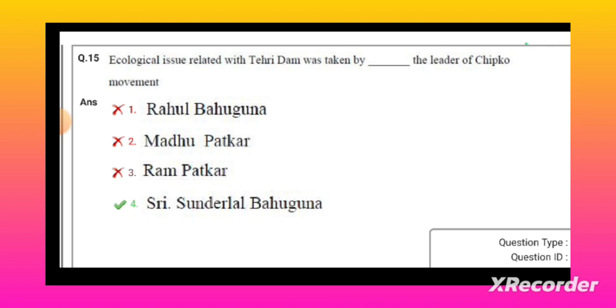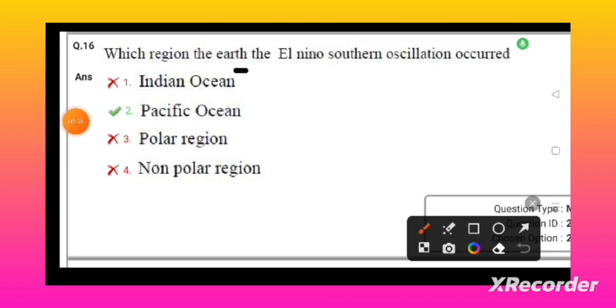Ecological issue related to the Tehri Dam was taken by the leader of Chipko movement. The Chipko movement leader was Sundarlal Bahuguna. Which region on Earth does the El Niño or Southern Oscillation occur?